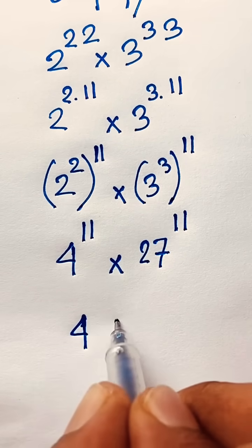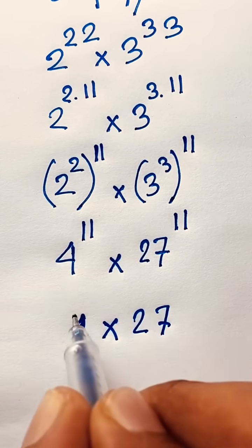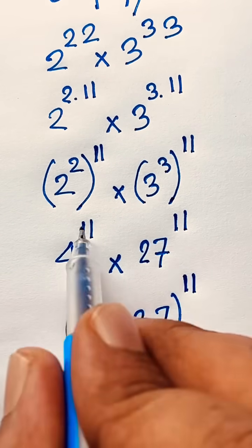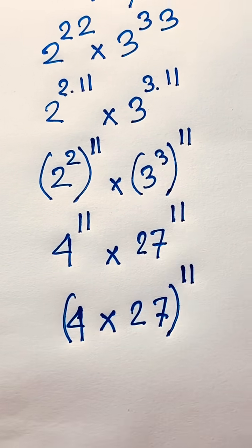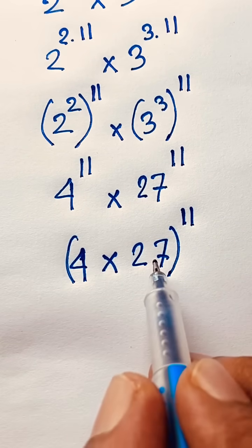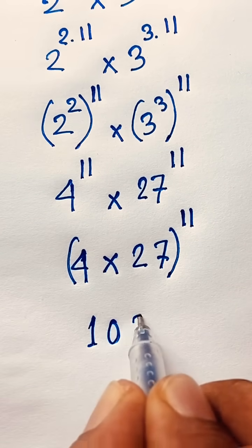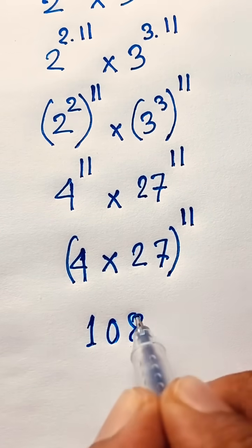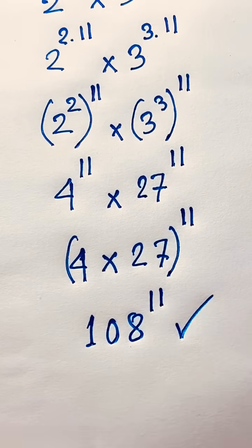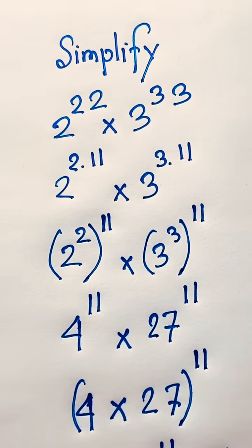Now according to exponential law, since the exponent is the same, I can write this as 4 times 27, whole to the power 11. 4 times 27 equals 108, and the power is 11. So 108 to the power 11 is our final answer to this exponential math problem.